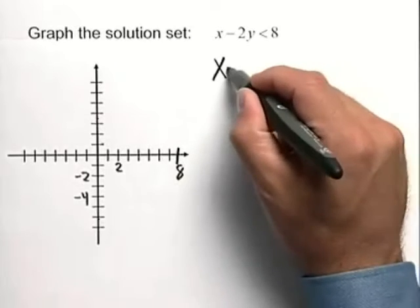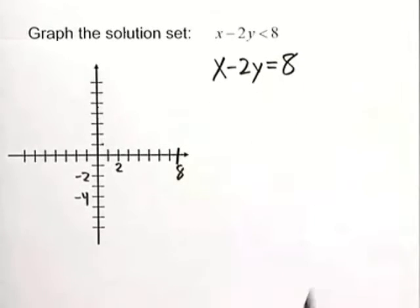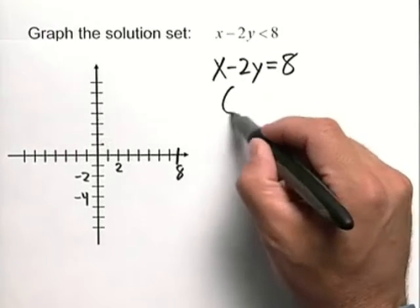First thing we need to graph is actually a boundary line between the true and the false ordered pairs, and you can graph this any way you want. You can use intercepts, slope-intercept form, anything like that.